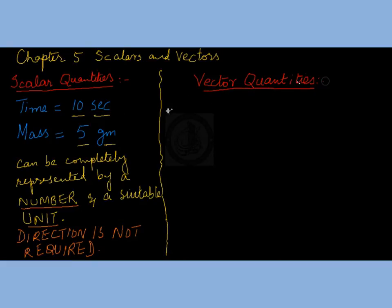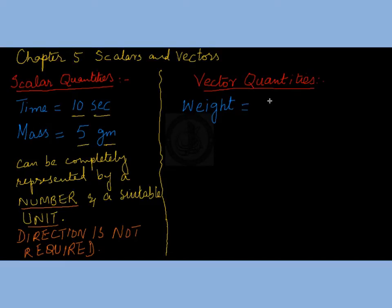For example, if I talk about weight — we have already discussed that weight is directed towards the center of the Earth. For example, 10 newtons, because weight is a force. So we see here that a number with a suitable unit plus direction is needed.